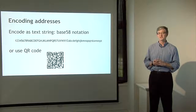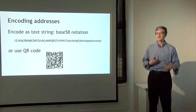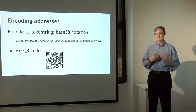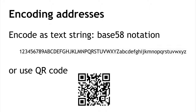One thing you need to do to receive or spend bitcoins is have a way of exchanging an address with somebody. There are two main ways addresses are encoded. The first is as a text string: we take the bits of the key and encode it as a number in base 58 notation, using 58 characters — digits, capital letters, and lowercase letters — except those that might look confusingly alike, like capital O and zero, are removed.